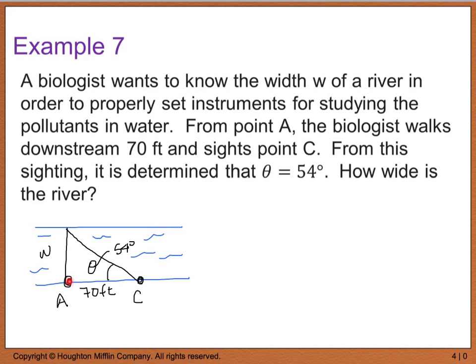I'm standing at point A, looking downstream 70 feet to a point C. From this point, we can identify that angle theta, which is right here, is equal to 54 degrees. And we want to solve for the width w. So let's identify first what's been given.